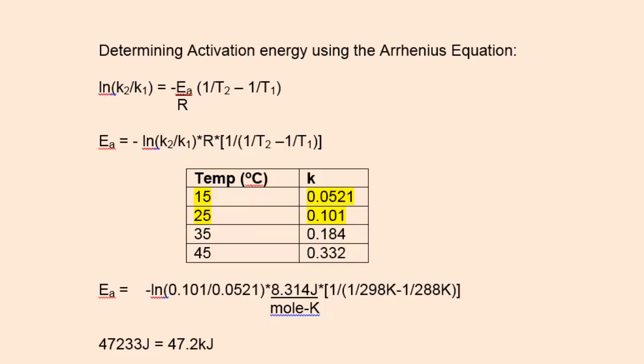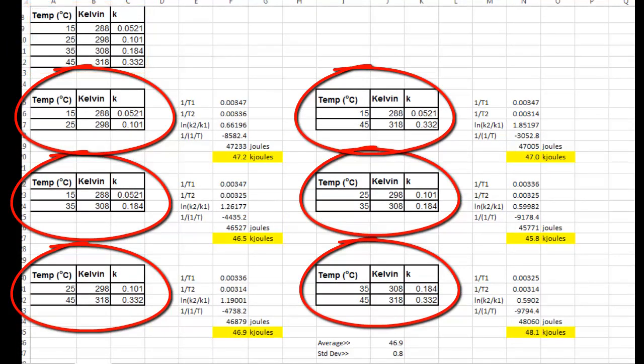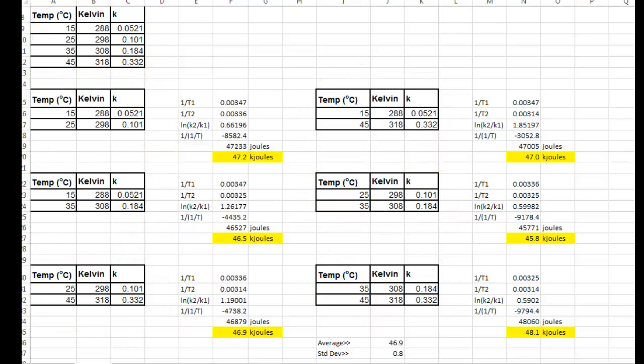I prepared a spreadsheet to show this. Picking the possible combinations or pairs of temperature and rate constants, I come up with six slightly different activation energies.